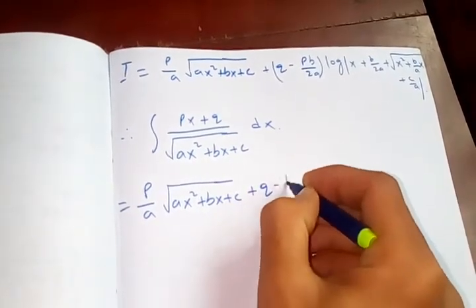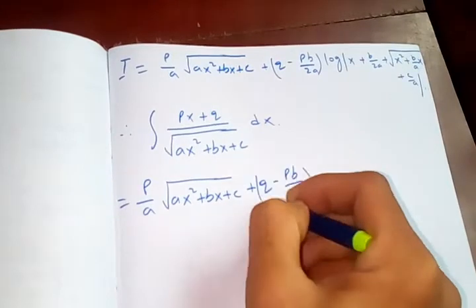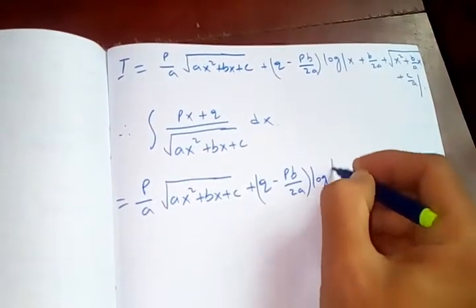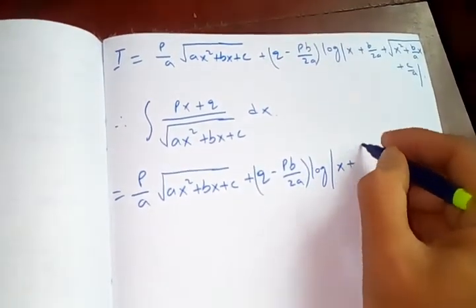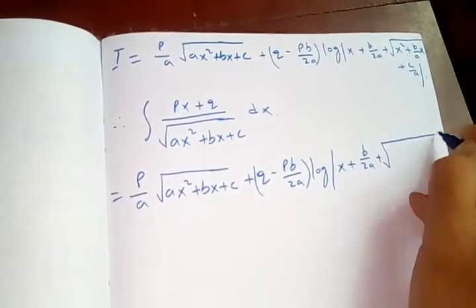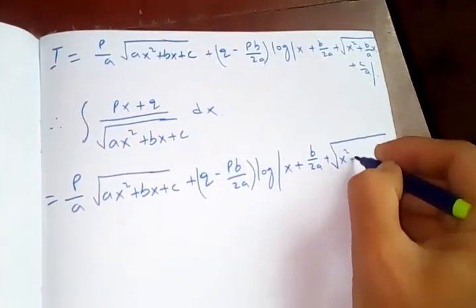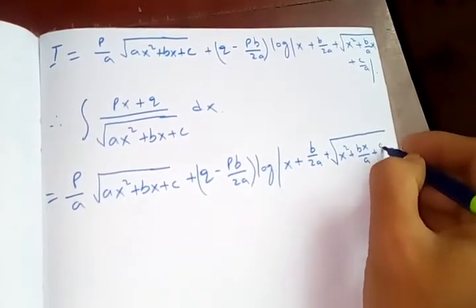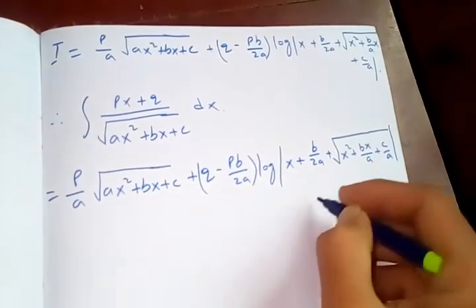plus q minus pb upon 2a log of x plus b over 2a plus square root of x square plus b over a x plus c over a, plus